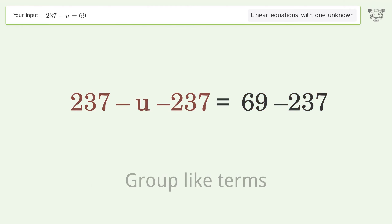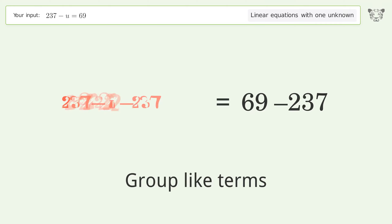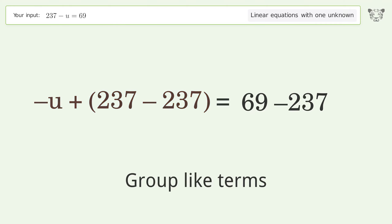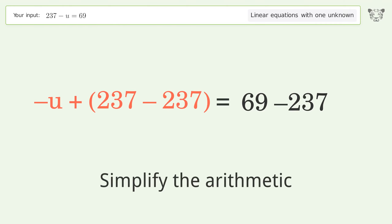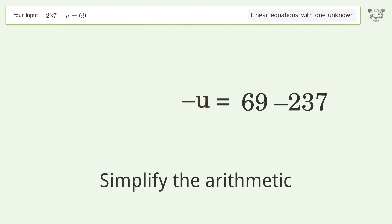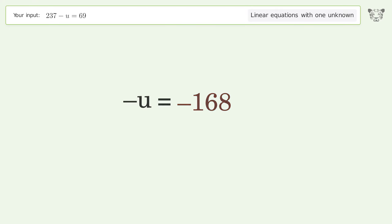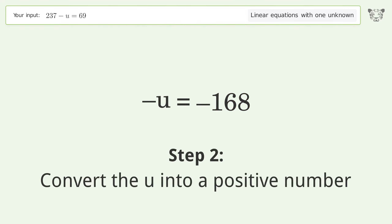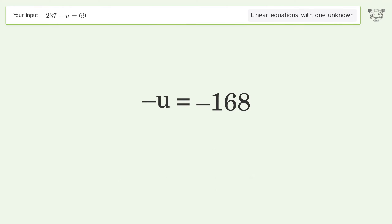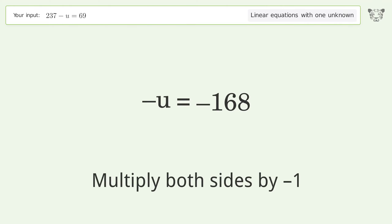Group like terms and simplify the arithmetic. Convert u into a positive number by multiplying both sides by negative 1.